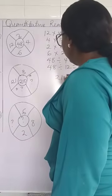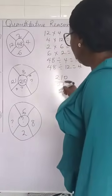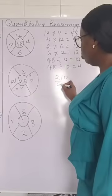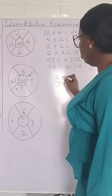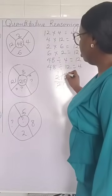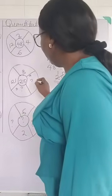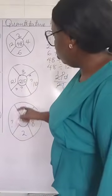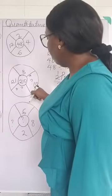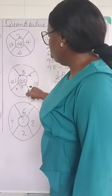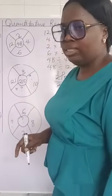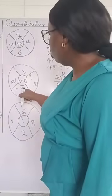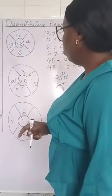To get our answer in A, we are going to divide 210 by 21. When you cancel, 21 divided by 21 is 1, so we get 10. That means 21 multiplied by 10 gives us 210 — we have achieved the value of A, which is 10.